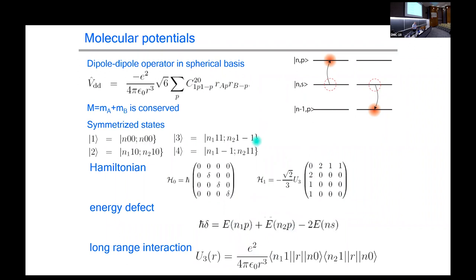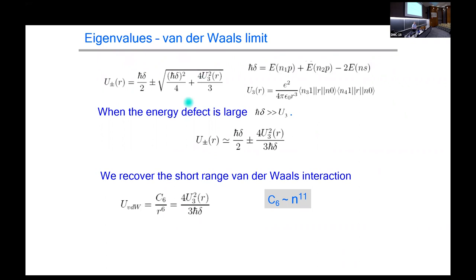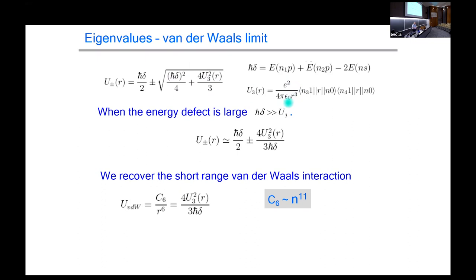I can write down the Hamiltonian for that four-by-four problem. I assign the NS-NS energy to zero, and the energies of the other states have a difference delta — this energy defect or Förster defect — which is the difference in energy of an atom in the P state versus my two initial NS states. That's my energy defect delta on the diagonal. Then I have the interaction matrix between those states, which is just the matrix elements of the dipole-dipole operator written in a spherical tensor basis. Solving that Hamiltonian gives energy eigenvalues that scale as the energy defect plus or minus the square root of the square of the defect and the square of the U factor, which is the product of matrix elements connecting those S and P states.